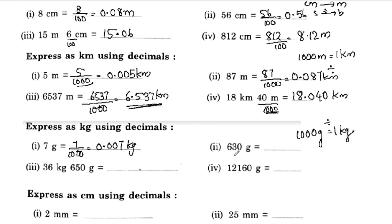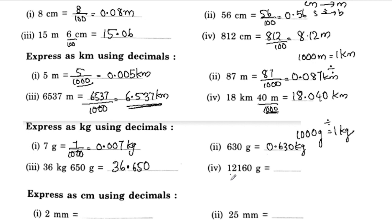630 grams is equal to 0.630 kilogram — 630 by 1000 is equal to 0.630 kilogram. If we have 12160 grams, we convert: divide by 1000. If gram is 3 digits, we put the decimal point in the same way. The decimal point is 3 digits, so this is 12.160 kilogram.